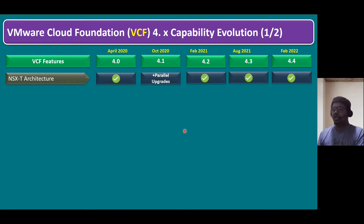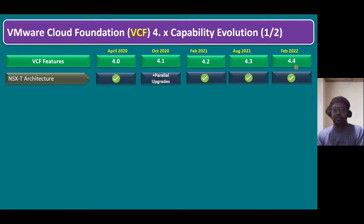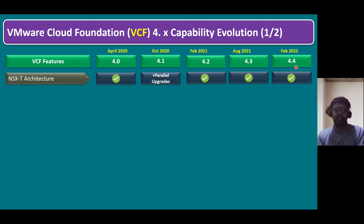Recently, during the August VMware Explore event, VMware officially announced the release of VCF 4.5 as well. They also came up with VCF Plus — instead of a perpetual license, it's now available as a subscription-based license. Same as vSphere Plus and vSAN Plus, which is available from the 8th edition onwards, VCF Plus is now released as a subscription-based model.